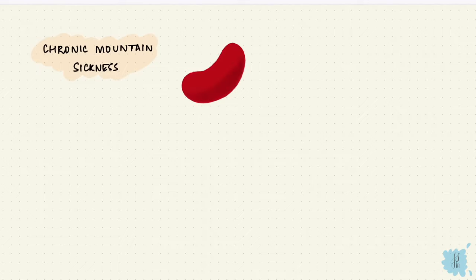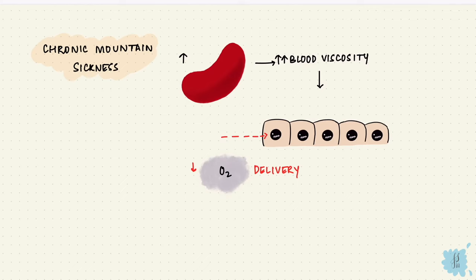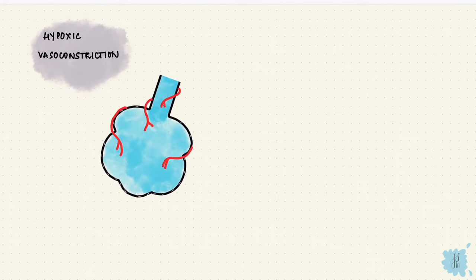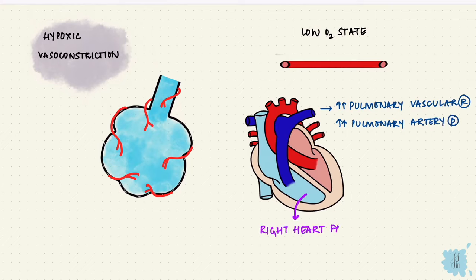In chronic mountain sickness, the RBCs and hematocrit increase a lot, so there's more blood viscosity, that actually reduces tissue blood flow, and can reduce oxygen delivery to the tissues. Hypoxic vasoconstriction is meant to be protective, give blood to the better ventilated alveoli. In chronic mountain sickness, all of the alveoli are in a low oxygen state, so all the arterioles constrict, increasing the pulmonary vascular resistance and pulmonary arterial pressure by a lot. This can cause the right heart to fail.